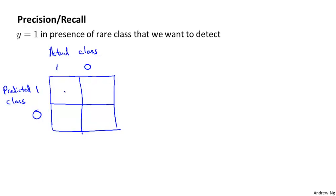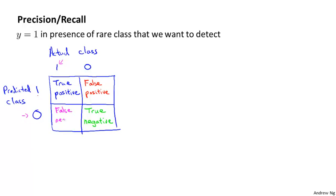If the actual class is 1 and the predicted class is 1, that's called a true positive — our algorithm predicted positive and the example is actually positive. If our algorithm predicted class 0 and the actual class is also 0, that's a true negative. If our algorithm predicts class 1 but the actual class is 0, that's a false positive — we thought the patient had cancer but they don't. Finally, if we predicted 0 but the actual class was 1, that's a false negative.